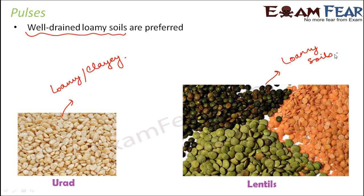Overall, if you start studying each and every crop, you will see that they have some specific need and they grow only in a particular environment. Whichever soil type provides that environment is the most suitable one to cultivate that particular crop.